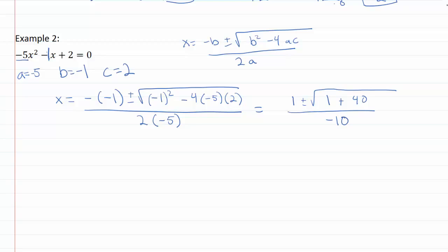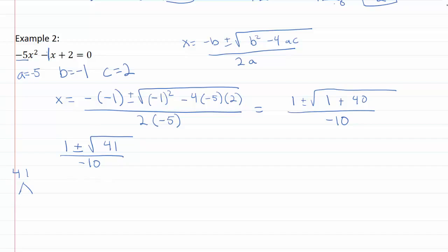Now I can combine the numbers inside the radical: 1 plus 40 gives the square root of 41 over negative ten. I can see that 41 isn't a perfect square, but let me check whether I can simplify using prime factorization. Actually, 41 is a prime number, so there's no way to simplify this radical any further. So x equals 1 plus or minus the square root of 41, all over negative ten — this fabulous mess is our final answer. It's not that rare with the quadratic formula to have a plus or minus sign in your final answer.